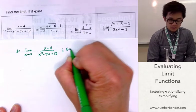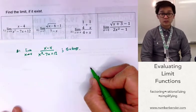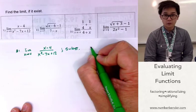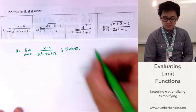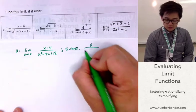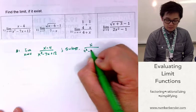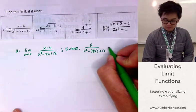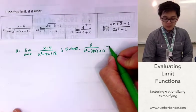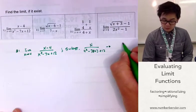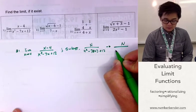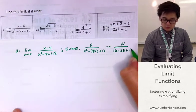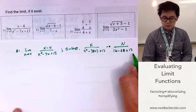The first thing you need to do is use the substitution method. I check the denominator to see if it's going to be equal to 0. Let's try substitution first with x equal to 4. We have 4 squared minus 7 times 4 plus 12, which gives us 16 minus 28 plus 12. And 16 minus 28 plus 12 is going to give us 0.